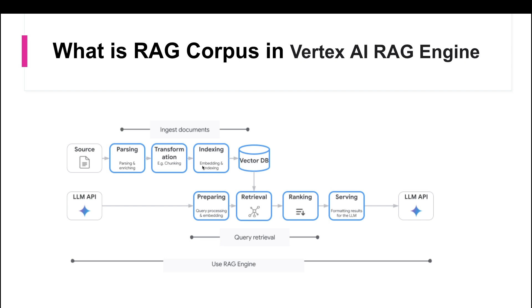Then there is data indexing. Vertex AI RAG engine creates an index — we call it a corpus. So if someone asks you what is a corpus, it's nothing but an index which Vertex AI RAG engine creates. The index is like a detailed table of contents for a massive reference book. When you open a book, you see the reference table and you know which page has which topic, so you can directly go to that page and read the content. The index works similarly.